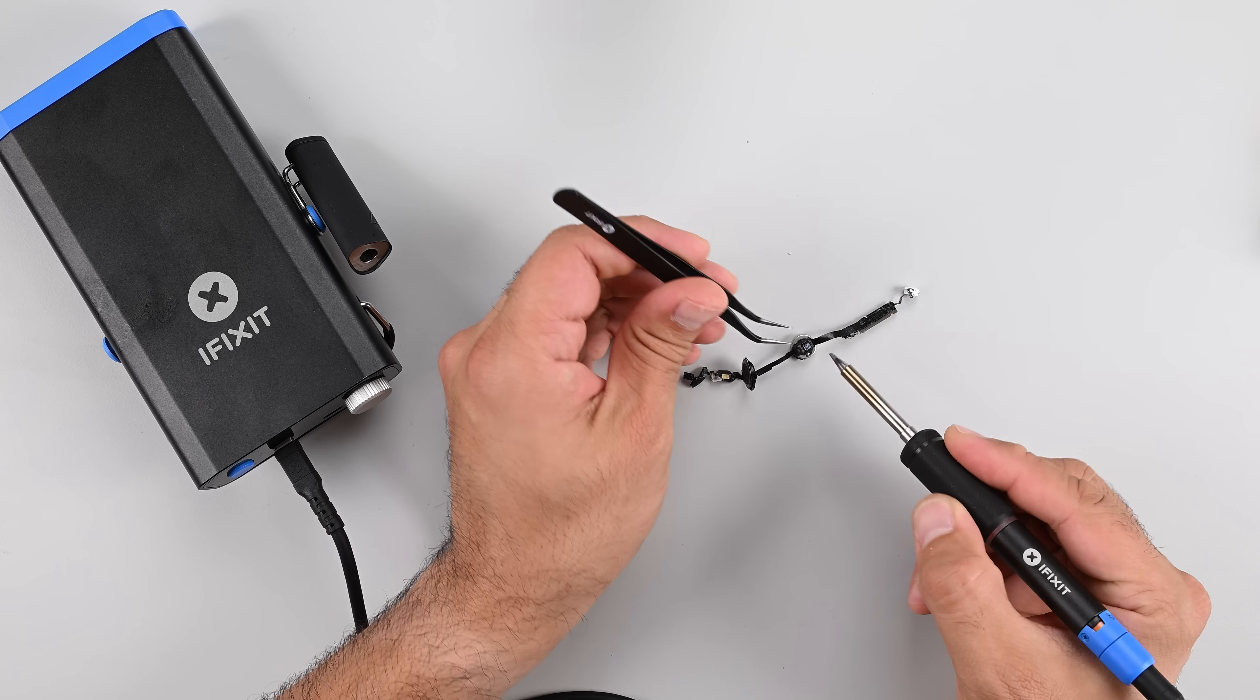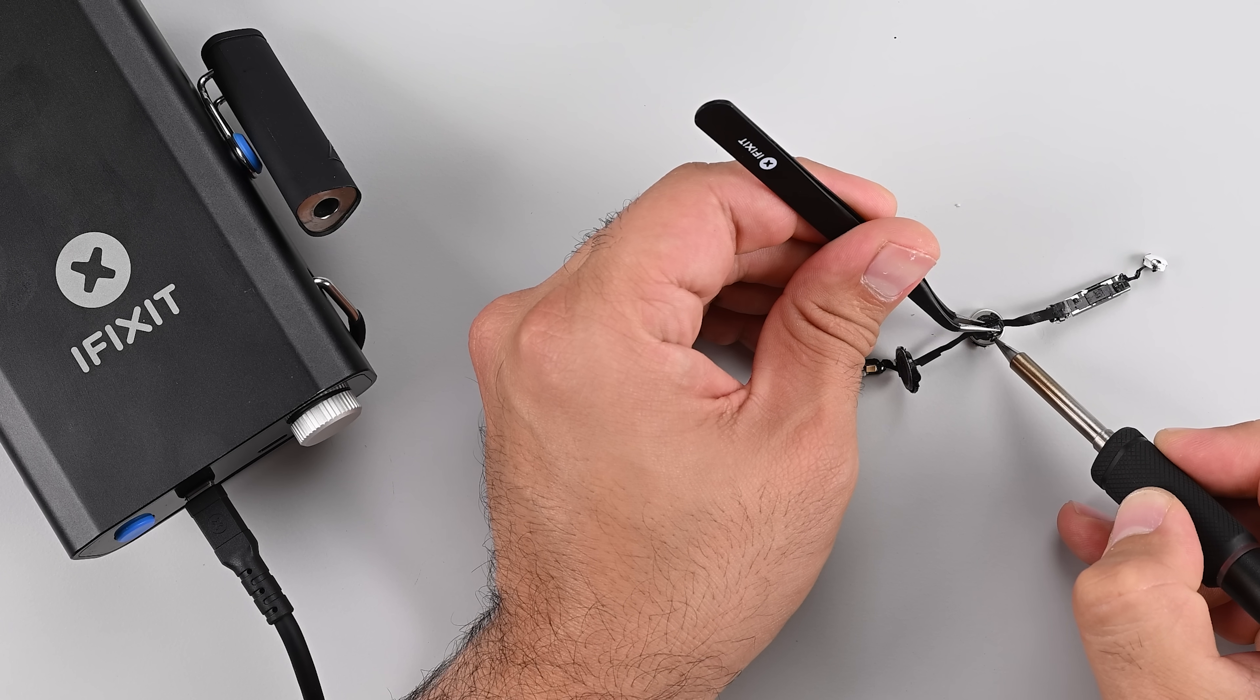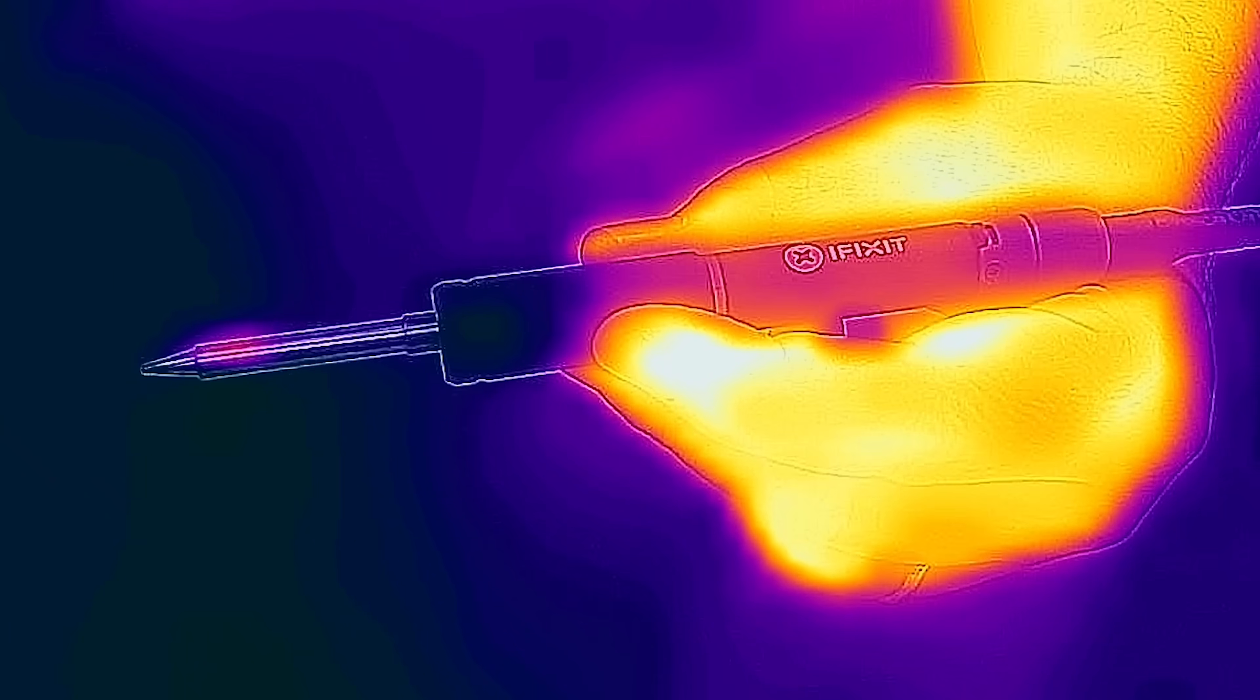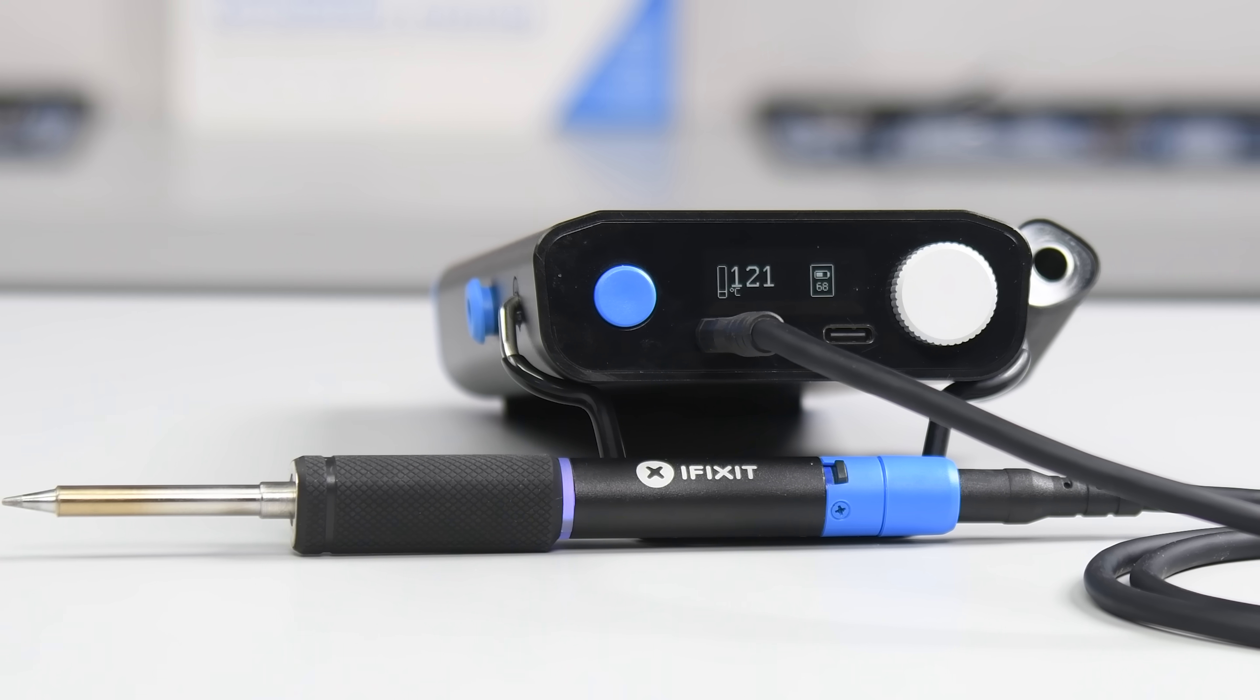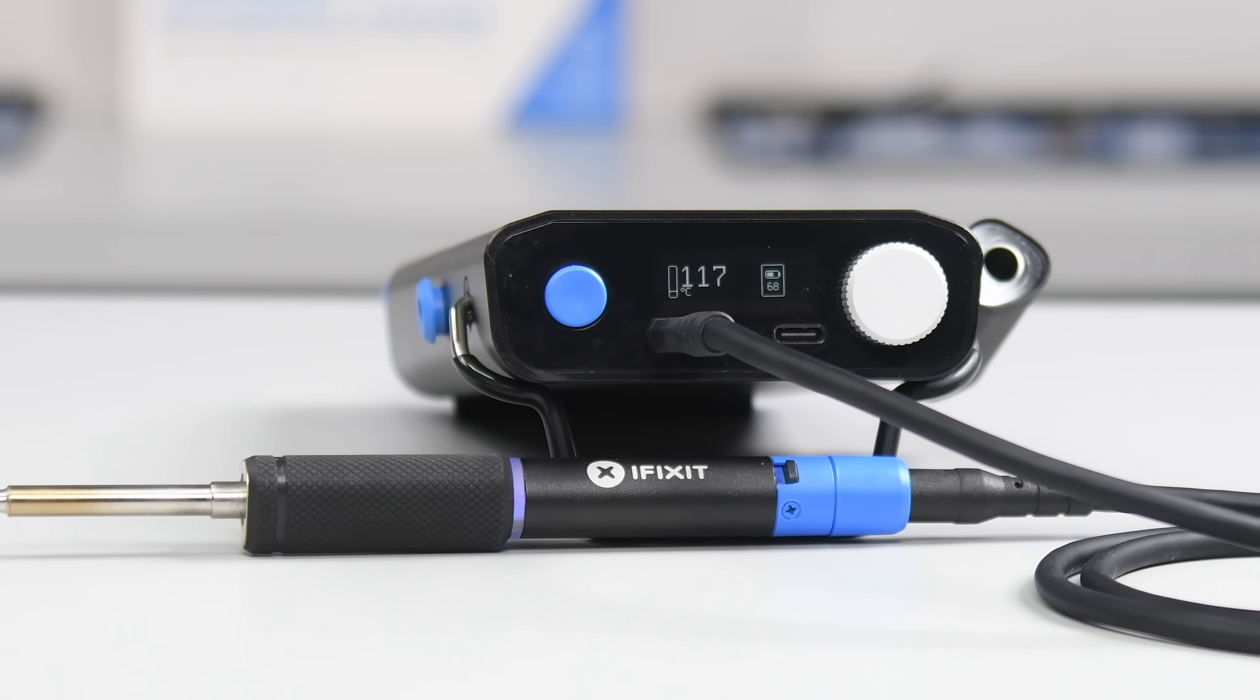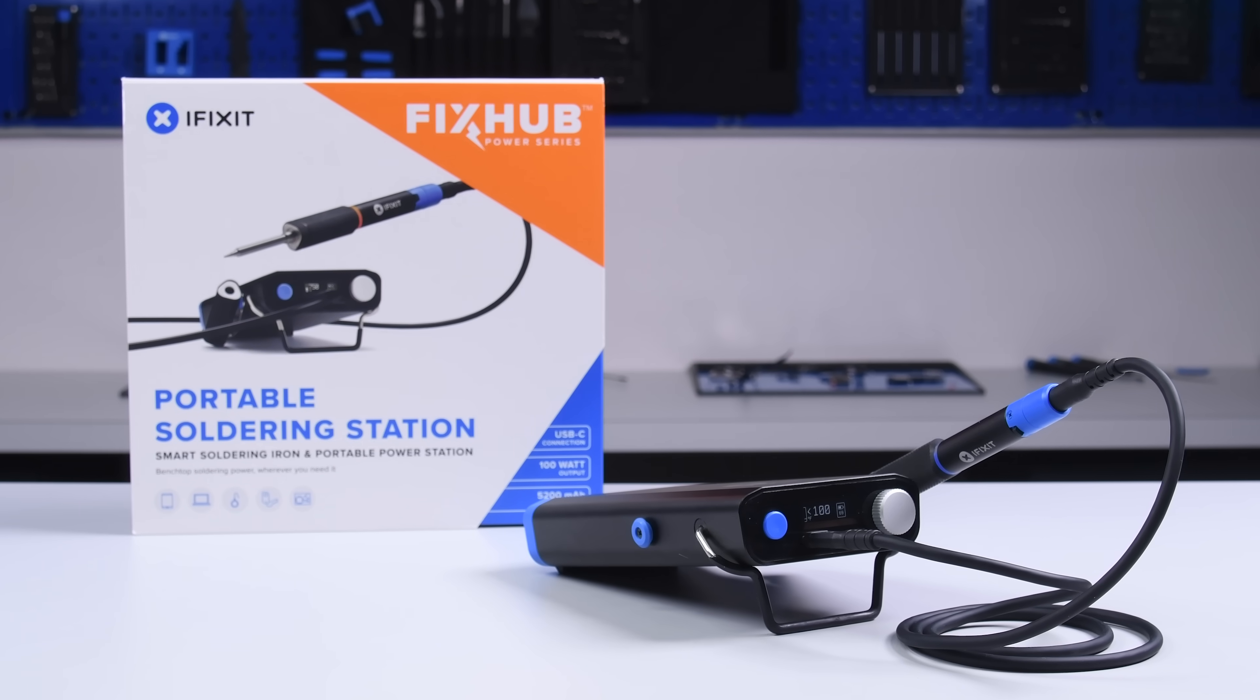With the inner components out, I'm going to use my FixHub Power Series portable soldering station to remove the 1.23 mWh battery. This portable smart soldering iron can go from zero to ready to solder in about five seconds, and it's all powered with a 55 watt-hour rechargeable battery that can keep you soldering for up to eight hours without recharging. They're available to pre-order on our website today.